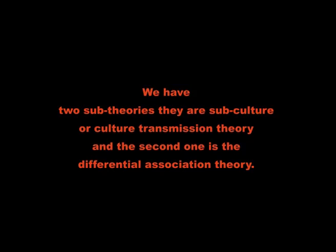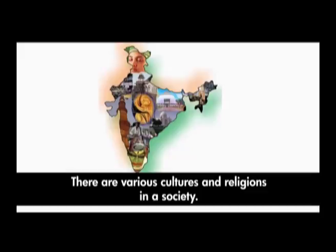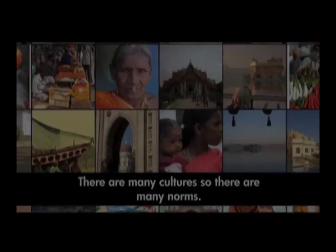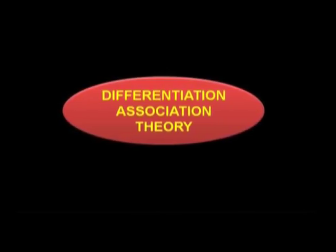The second theory is sociocultural learning theory. It has two sub-theories: subculture or culture transmission theory, and differential association theory. In a society, there are various cultures and religions, and since there are many cultures there are many norms, which leads to socially deviating behaviour. The differential association theory explains why some people are attracted to deviant behaviours while others are not. Learning a deviant behaviour involves acquiring a set of motives, drives, rationalizations, attitudes, and specific techniques for committing the deviant act.